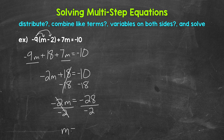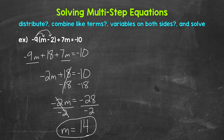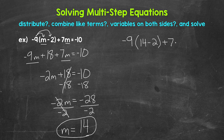m is now isolated. So we have m equals negative 28 divided by negative two — a negative divided by a negative gives us a positive, so this gives us positive 14. That's our solution: m equals 14. Now let's check that solution by plugging it in for m. So we have negative nine, then 14 minus two, plus seven times 14, equals negative 10.